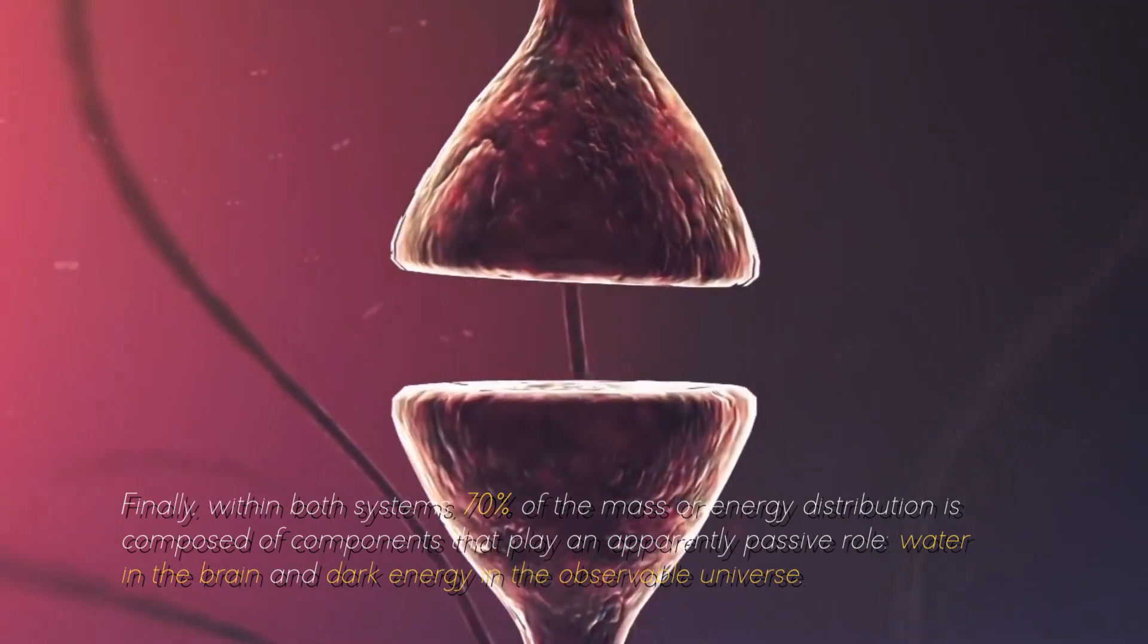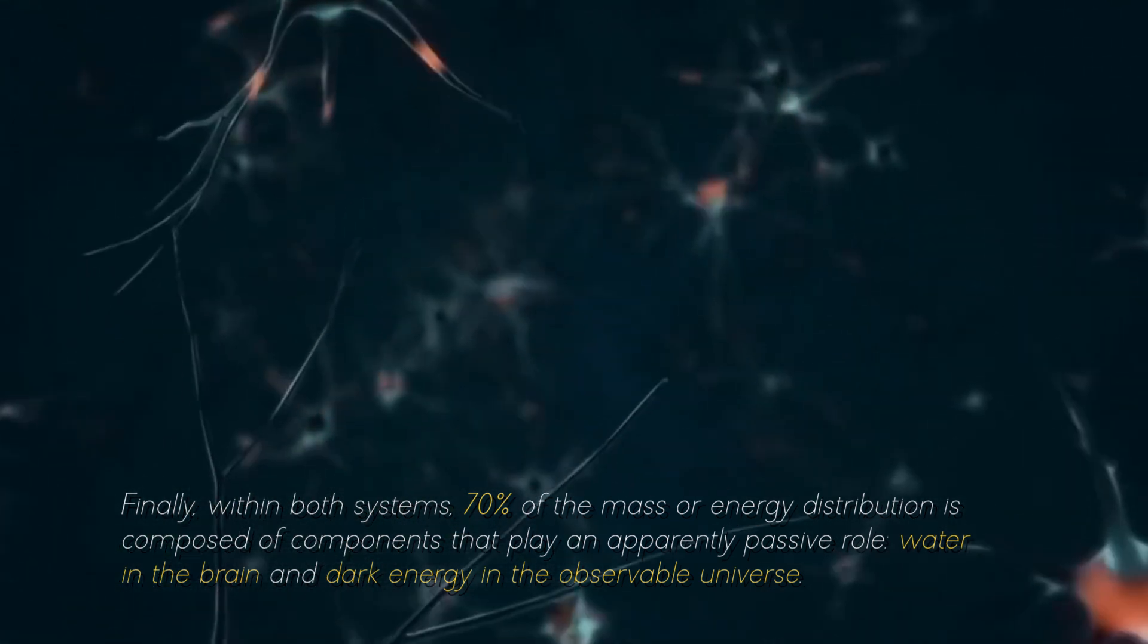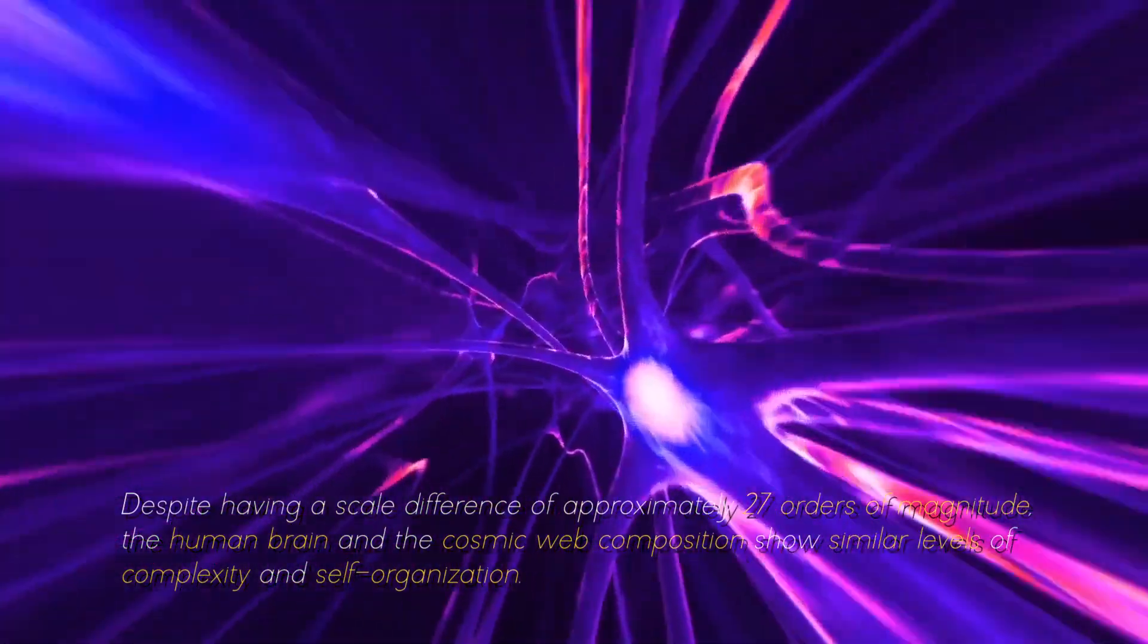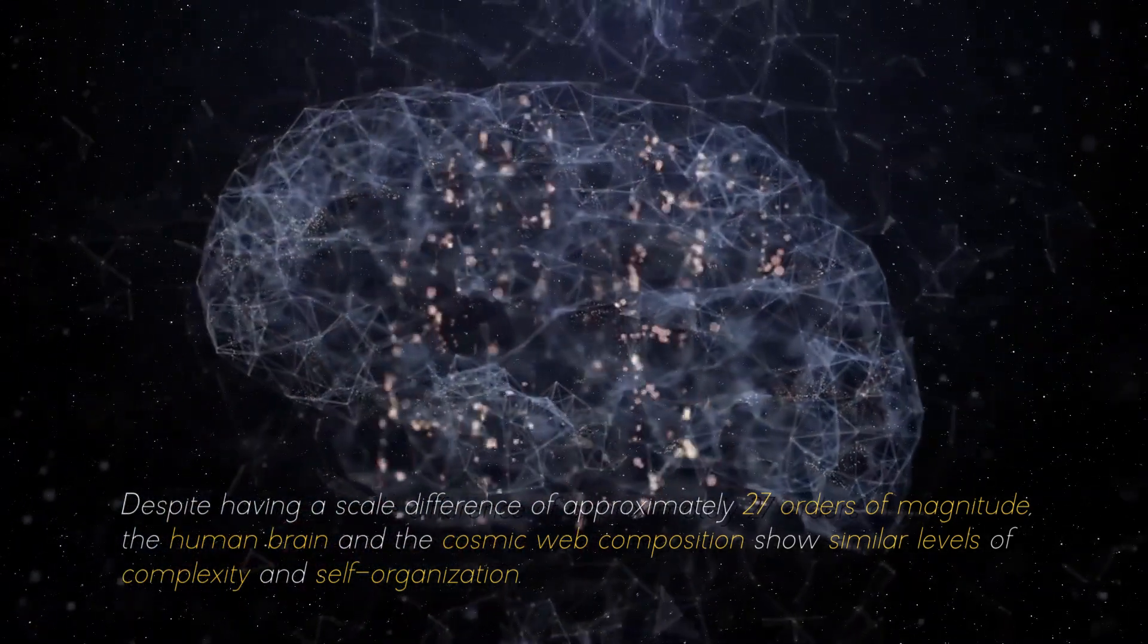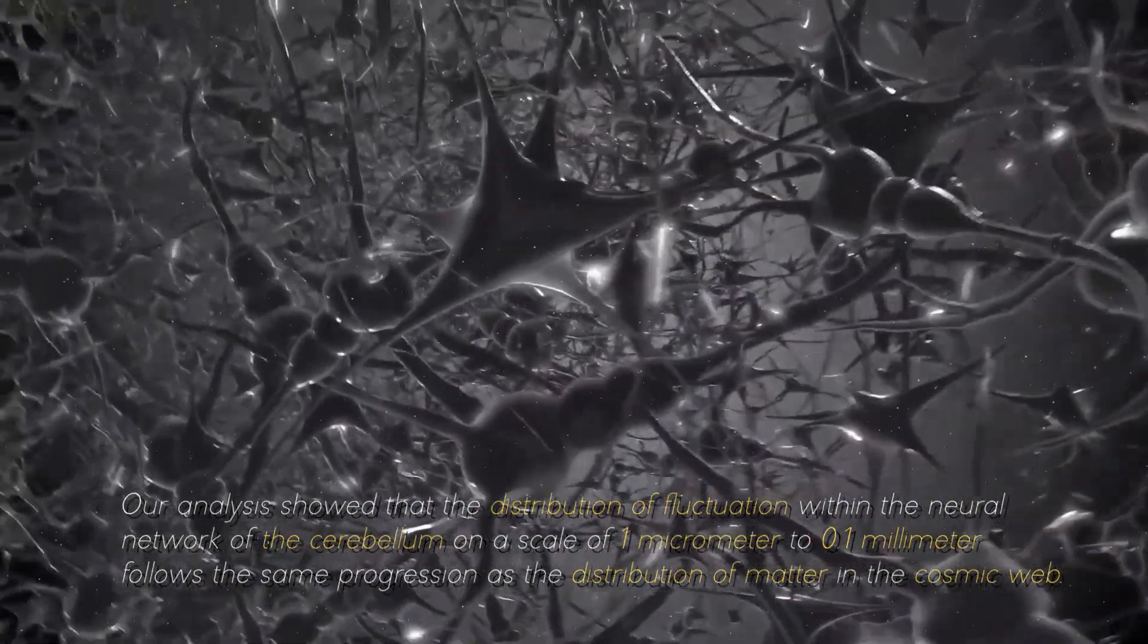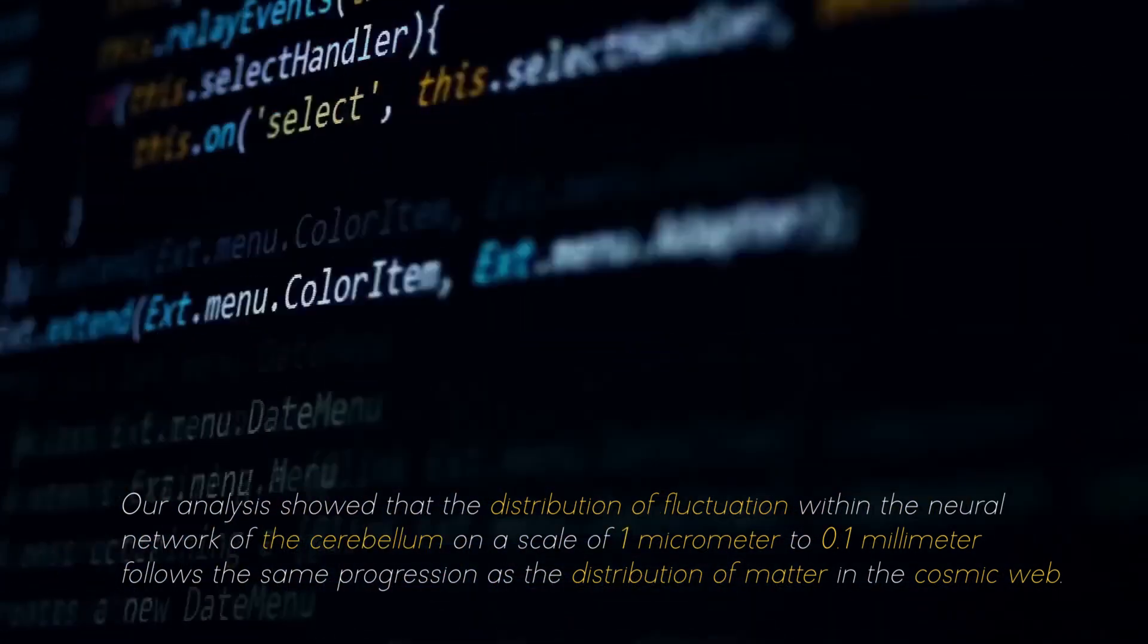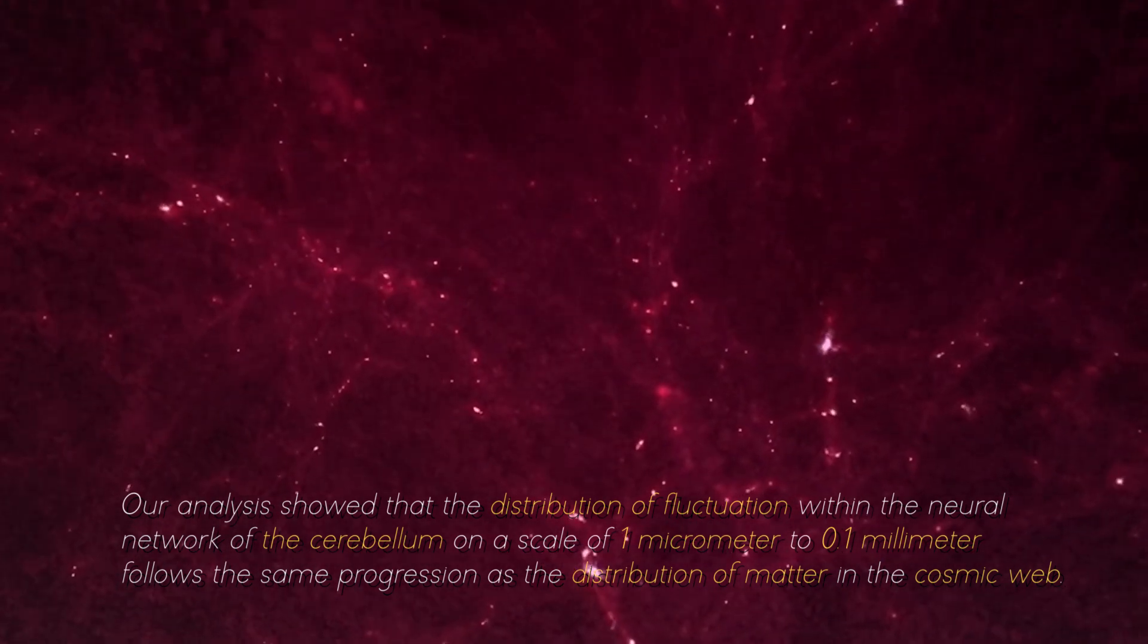Finally, within both systems, 70% of the mass or energy distribution is composed of components that play an apparently passive role, water in the brain and dark energy in the observable universe. Despite having a scale difference of approximately 7 times orders of magnitude, the brain and the cosmic web composition show similar levels of complexity and self-organization. Our analysis showed that the distribution of fluctuation within the neutral network of the cerebellum on a scale of 1 micrometer to 0.1 millimeters follows the same progression as the distribution of matter in the cosmic web, commented one of the researchers in charge of this project.